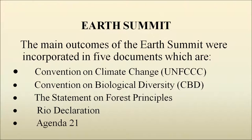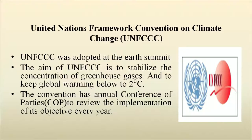The main outcomes of the Earth Summit were incorporated in five documents: the Convention on Climate Change, the Convention on Biological Diversity (CBD), the Statement on Forest Principles, the Rio Declaration, and Agenda 21. UNFCCC, the United Nations Framework Convention on Climate Change, was adopted at the Earth Summit. The aim of UNFCCC is to stabilize the concentration of greenhouse gases responsible for global warming and to keep global warming below 2 degrees Celsius, otherwise it would lead to the submergence of many coastal cities and countries.